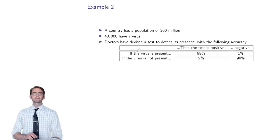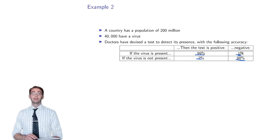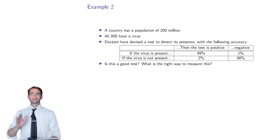You have a test to detect whether people have this virus or not, and the accuracy is shown in a table. If you have the virus, then 99% of the time you'll get a positive result. If you don't have the virus, you'll get a negative result 98% of the time. This 1% and 2% is what's left over — a 1% chance of a false negative and 2% chance of a false positive. It would seem the test is somewhere between 98 and 99% effective.